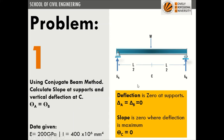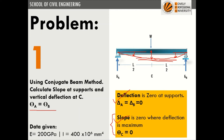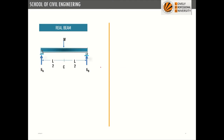Since this is a simply supported structure, deflection at supports A and B is zero. The beam deflects under the load, and from symmetry θA = θB. Under the point load there is maximum deflection, and slope is zero at that point. The bending moment at any section is Wx/2, giving a maximum value of WL/4 at midspan.